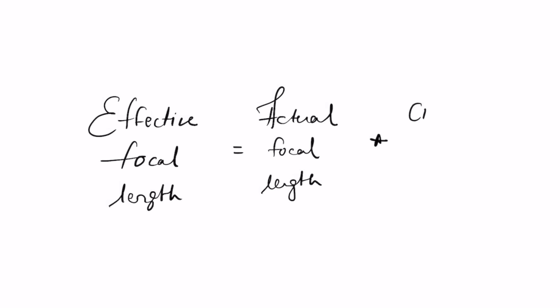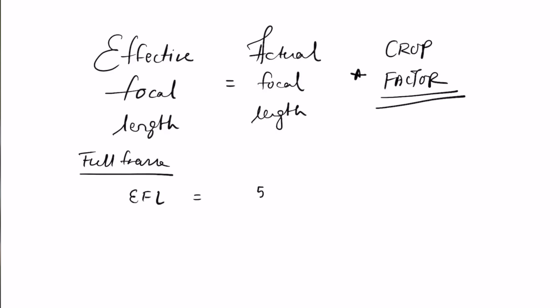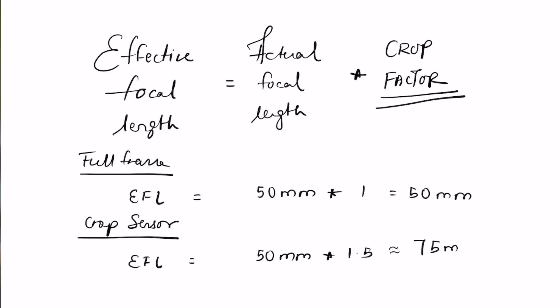But the effective focal length changes depending on the camera body you are using. There is a crop factor involved depending on the type of camera you are using. If you are using a full frame 50mm lens on a full frame camera, there is no crop factor — basically the crop factor is 1, so 50mm will be 50mm multiplied by 1, that is 50mm. But if you are using a crop sensor camera, there is a crop factor of 1.5 or 1.6 applied depending on the brand. Nikon uses 1.5, Canon uses 1.6. But the actual focal length of the lens still remains the same.